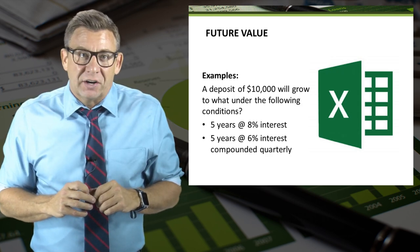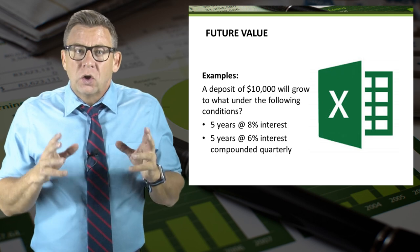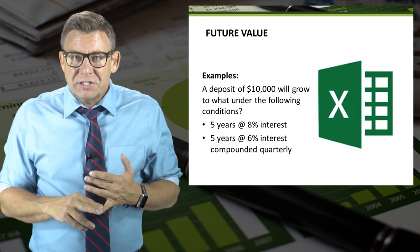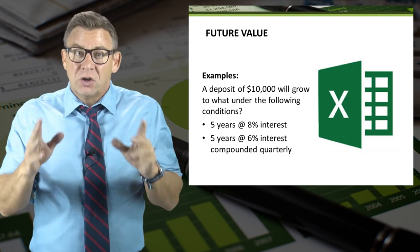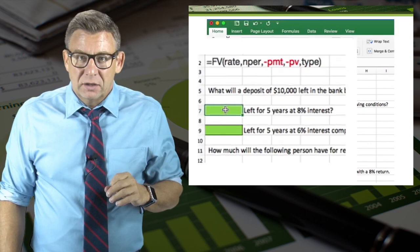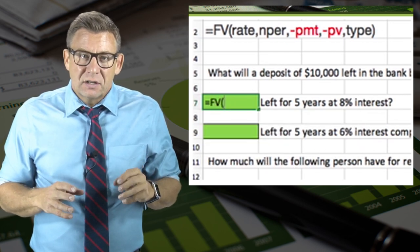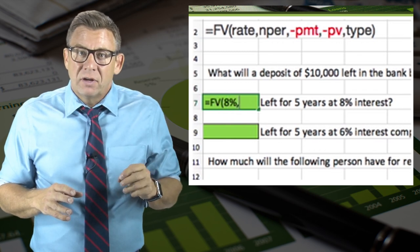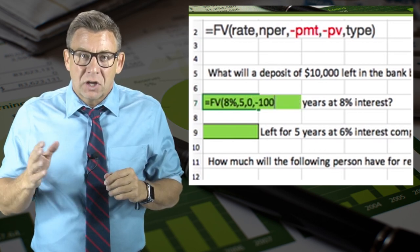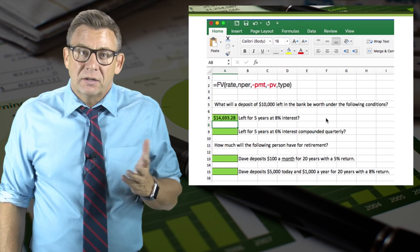So let's look at a couple different scenarios. For example, a deposit of $10,000 will grow to what amount under the following conditions? Five years at 8% interest. Using the future value formula, I enter equals FV, open parentheses, 8%, comma, 5, comma, 0 because there's no regular payment, and minus 10,000, close parentheses. This returns a future value of $14,693.28.